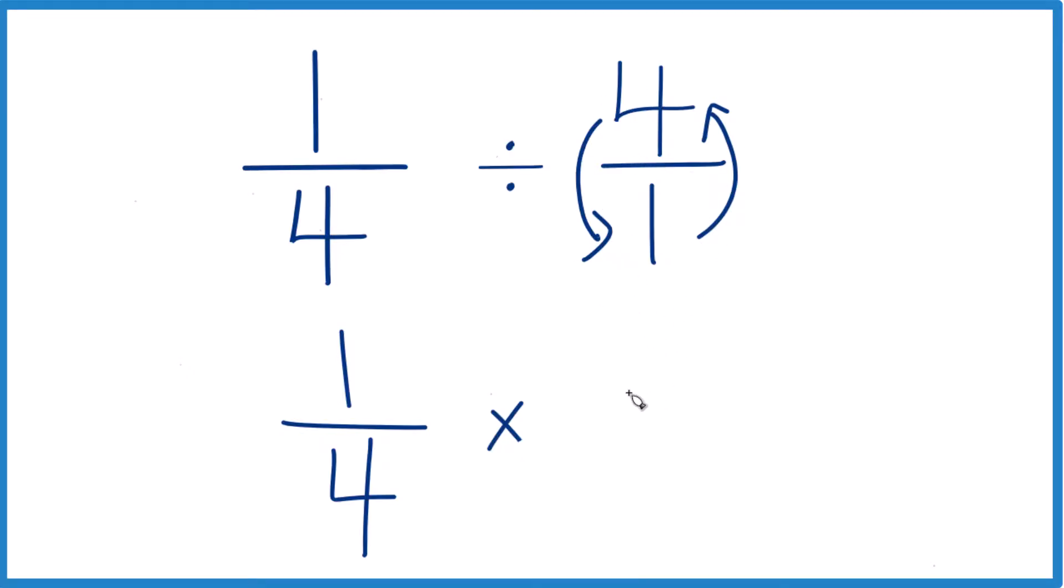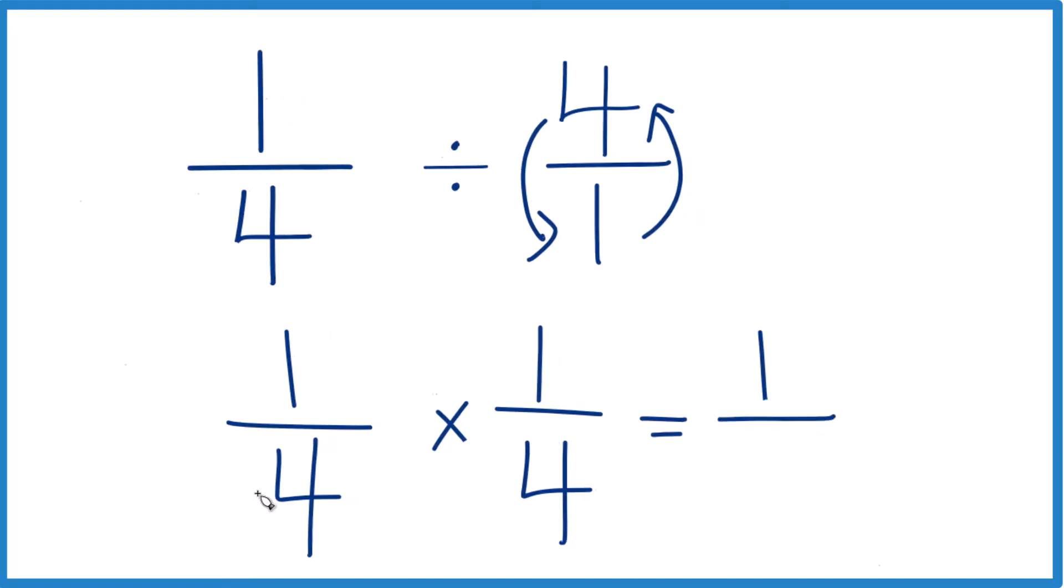So 1 on top, 4 on bottom, one fourth. So we're just taking one fourth times one fourth. With fractions, we multiply the numerators, 1 times 1, that's 1, and then the denominators, 4 times 4, that's 16.